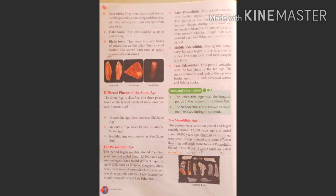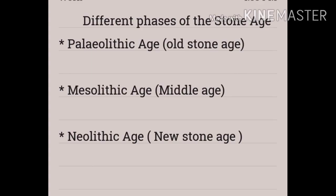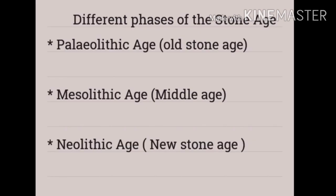As discussed in our previous class, the Stone Age was divided into different phases according to the quality of stone tools used. The first phase was the Paleolithic Age, also known as the Old Stone Age. The next is the Mesolithic Age, also known as the Middle Stone Age. And the next is the Neolithic Age, also known as the New Stone Age.